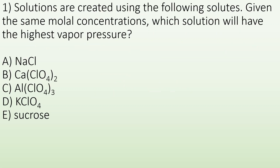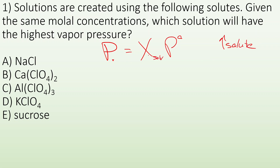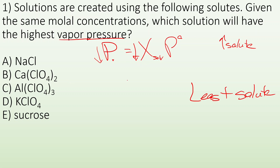Number one — solutions are created using the following solutes. Given the same molal concentrations, which solute will have the highest vapor pressure? We know that the vapor pressure for our mixture is going to equal the mole fraction times what it should have been when it was pure. So if we increase the solute, our mole fraction for our solvent is going to decrease, which means our partial pressure would decrease. So if we're looking for the highest vapor pressure, we want the least solute. We have to look at how many ions it breaks up into, because this mole fraction is for particles.